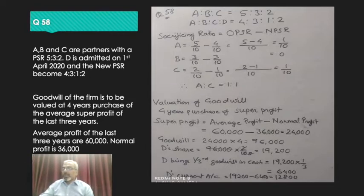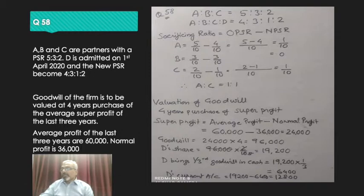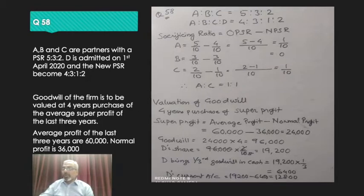D's share of goodwill is 96,000 × 2/10 = 19,200. The question clearly states that D brings only one third of the goodwill in cash: 19,200 × 1/3 = 6,400 brought in cash. The remaining two thirds, that is 12,800, will be shown through the treatment of D's current account.